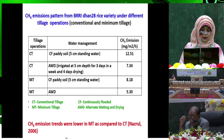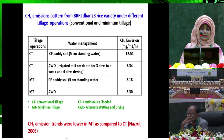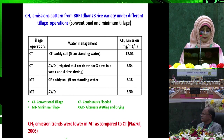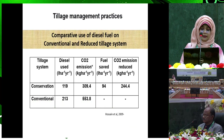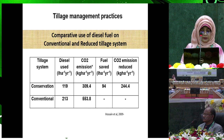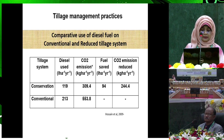The methane emission pattern from Breedhan 28 rice variety under different tillage operations — conventional and minimum tillage — shows that methane emission trends were lower in minimum tillage compared to conventional tillage. In conservation tillage, the carbon dioxide emission is reduced to 44.4 kg per hectare per year.